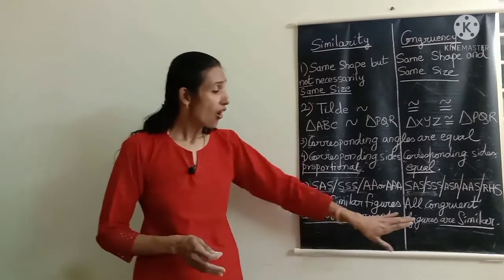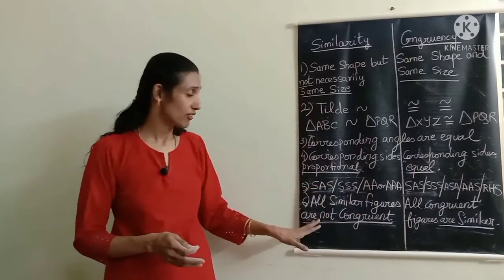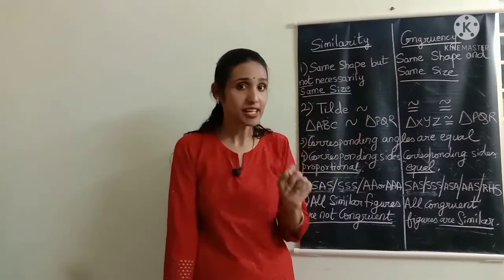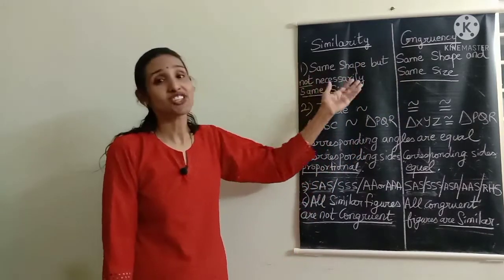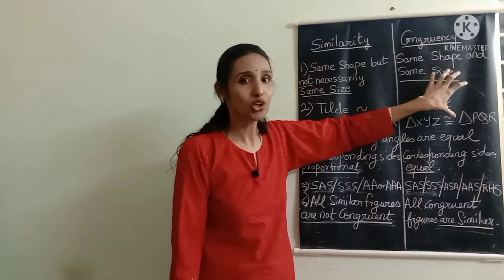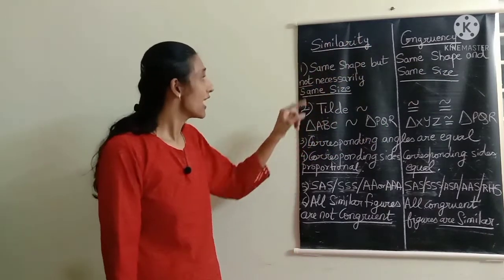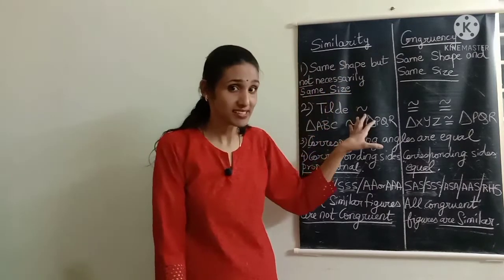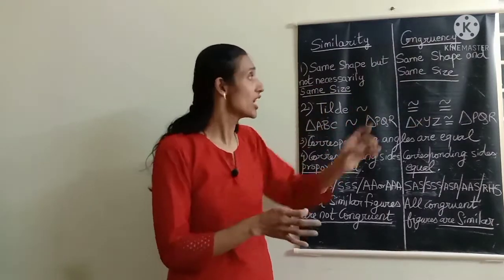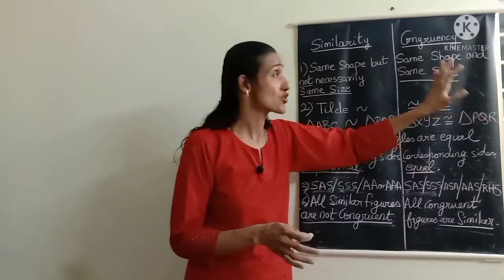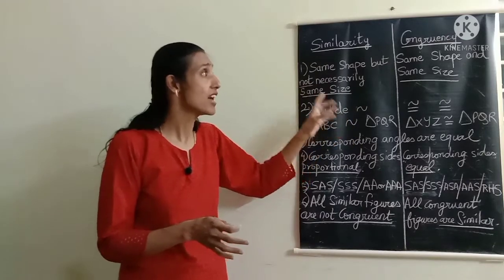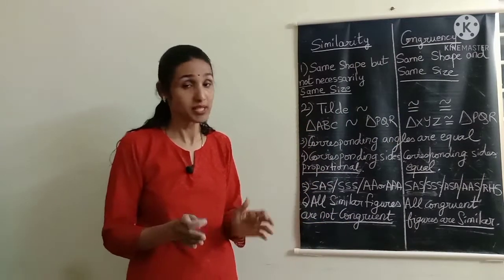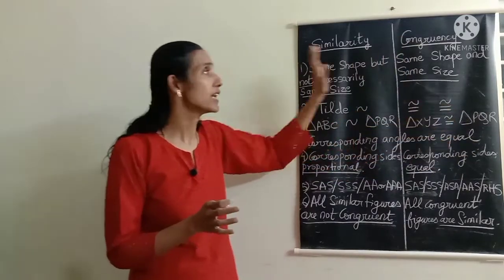We can conclude that all congruent figures are similar, but all similar figures are not congruent. For two figures to be congruent they need the same shape and the same size, whereas similar figures only need the same shape. So automatically all congruent figures are also similar figures. But if two similar figures don't have the same size, there is no way they can be congruent — and that's how we can say all similar figures are not necessarily congruent, but all congruent figures will definitely be similar.